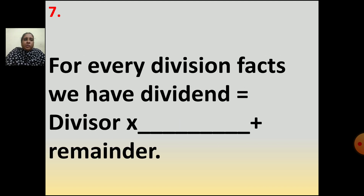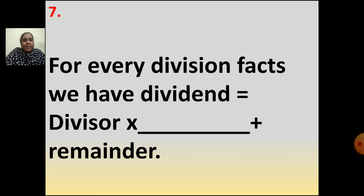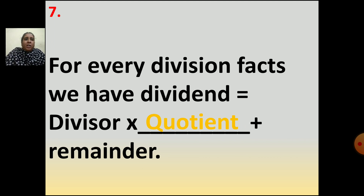Now the seventh question: For every division fact, we have dividend equal to divisor multiplied by dash plus remainder. Divisor multiplied by what? When you divide a number — when you divide dividend by divisor — what you get after dividing is the quotient. So your answer is quotient. For every division fact: dividend equals divisor multiplied by quotient plus remainder.